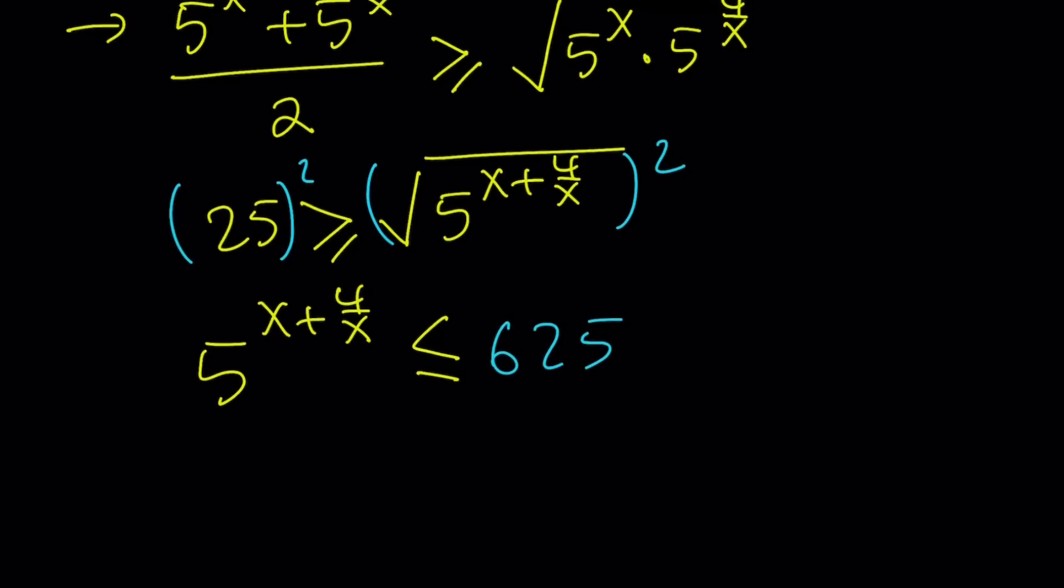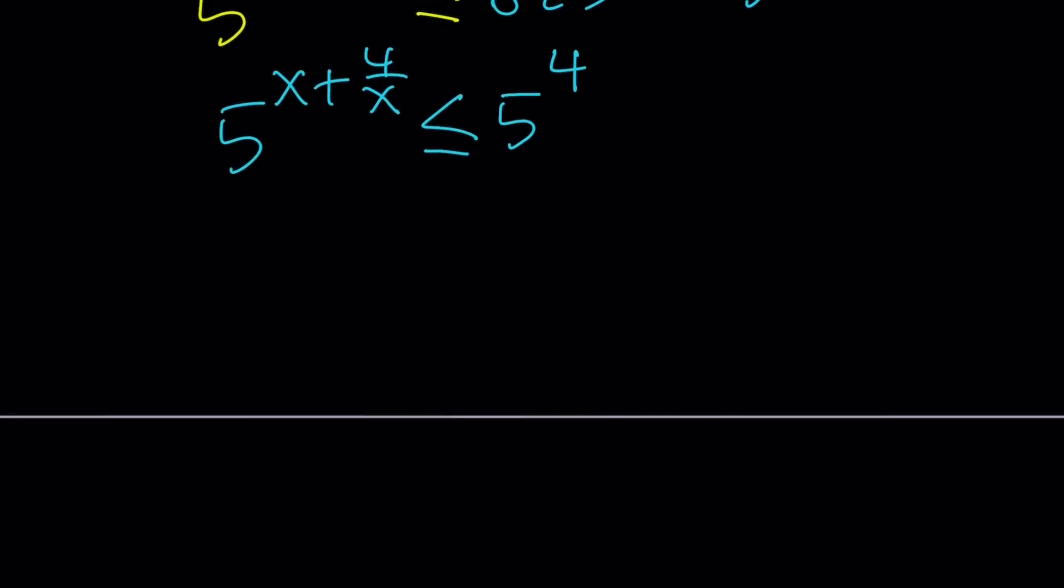After squaring both sides, 5 to the power x plus 4 over x is less than or equal to 25 squared. We squared both sides and switched sides, so the variable is on the left hand side, and this is 625. But 625 is 5 to the 4th power.